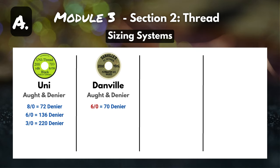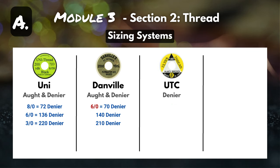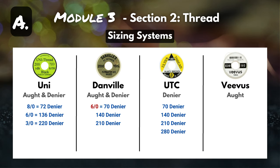Danville decided to leave aught behind altogether — their bigger threads are 140-denier and 210-denier. UTC had the same idea and doesn't use the aught system either, offering 70-denier, 140-denier, 210-denier, and 280-denier thread. Vivas went in the opposite direction and only uses aught: 16, 14, 12, 10, 8, and 6-aught. This is a little confusing because Danville's 6-aught is their lighter, smaller thread, but Vivas' 6-aught is on the bigger end.